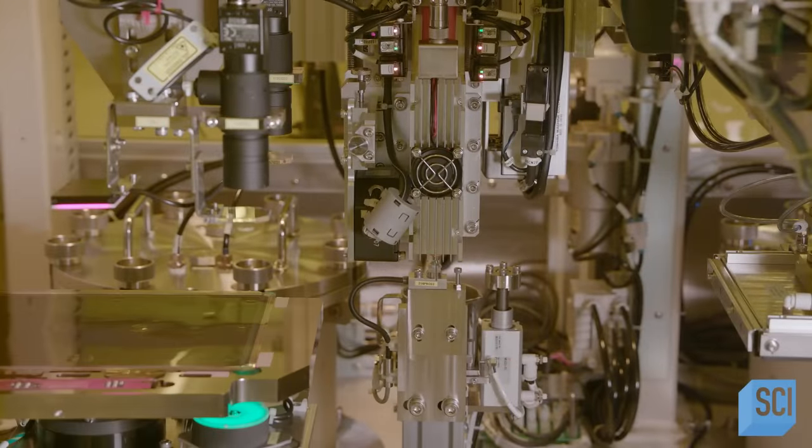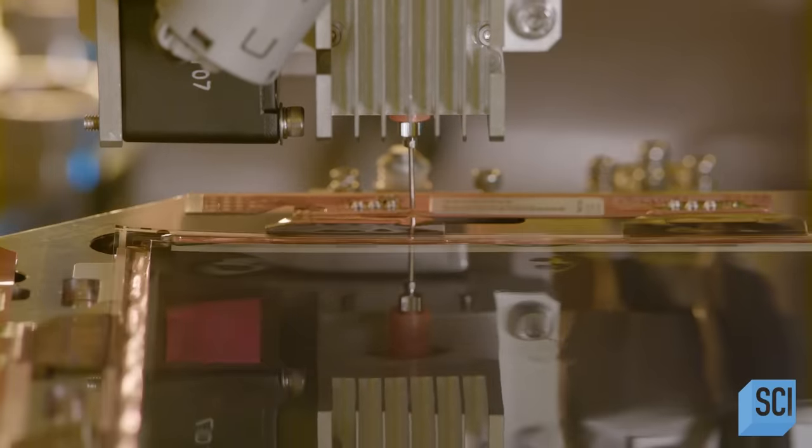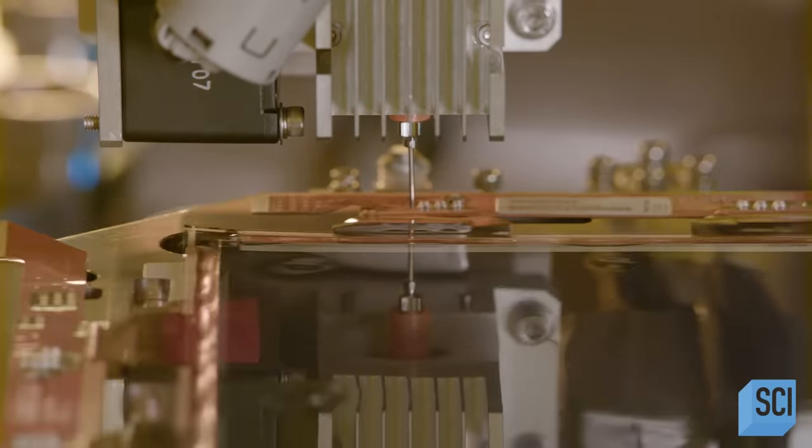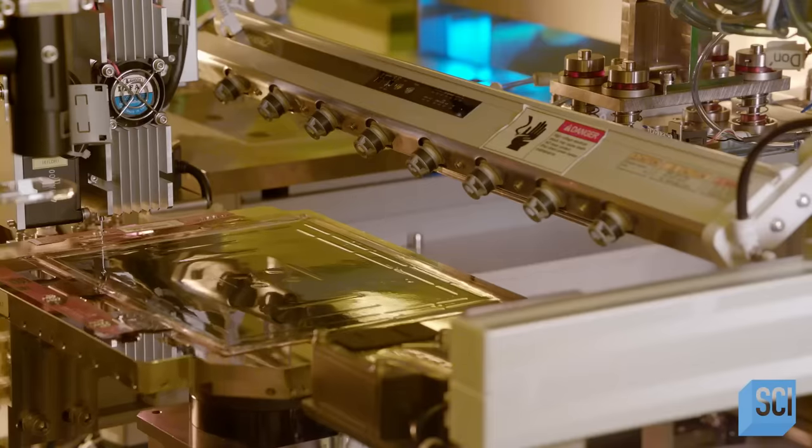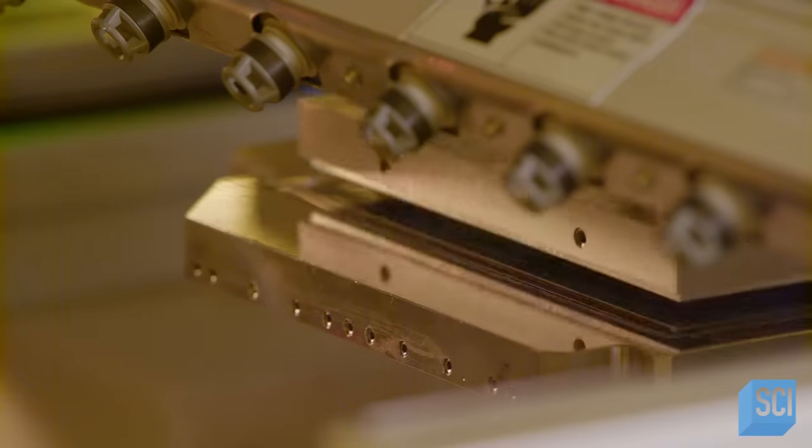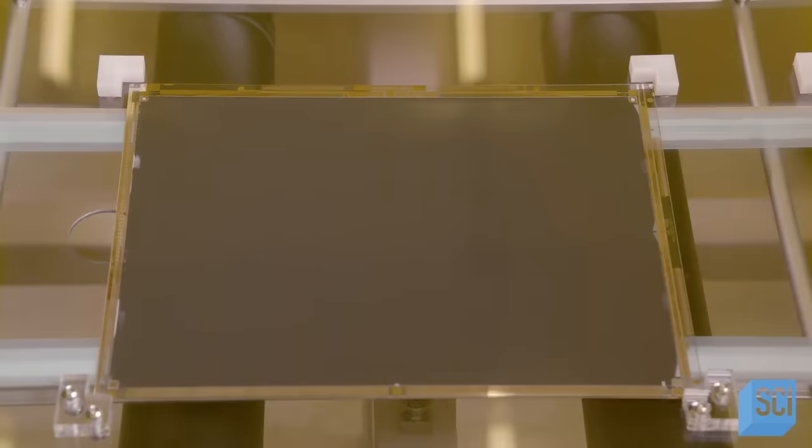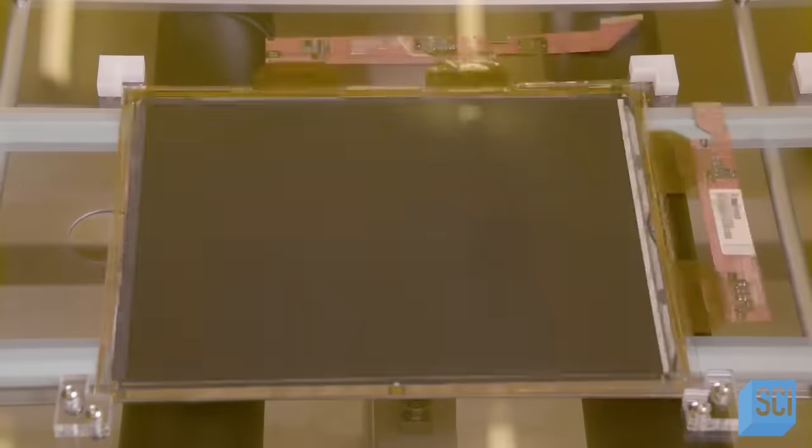An automated system bonds the electronics to a circuit board that's attached to the display screen. The system mechanically seals the circuit board. Polymer resin is applied for stability. UV light cures the resin. This is the electrophoretic display before and after the electronics have been added.